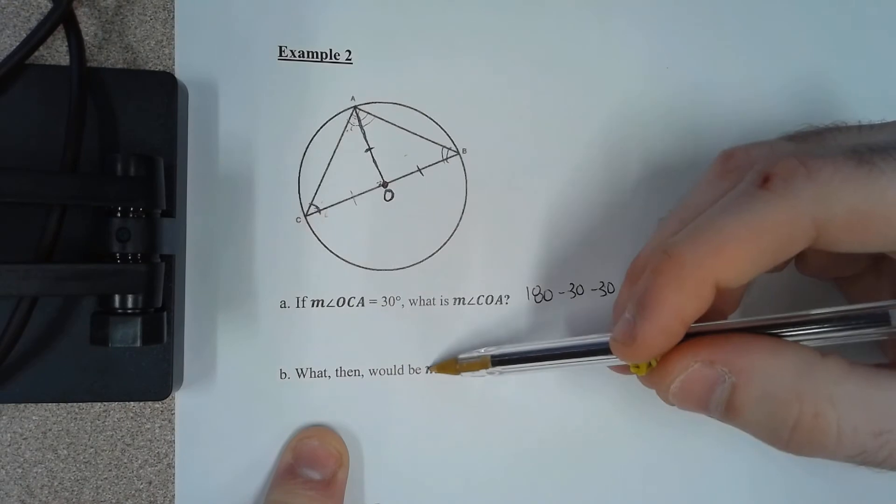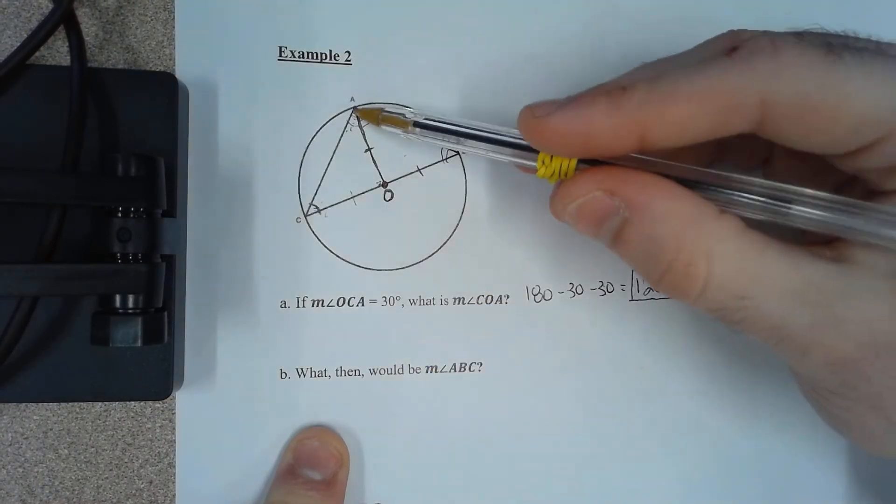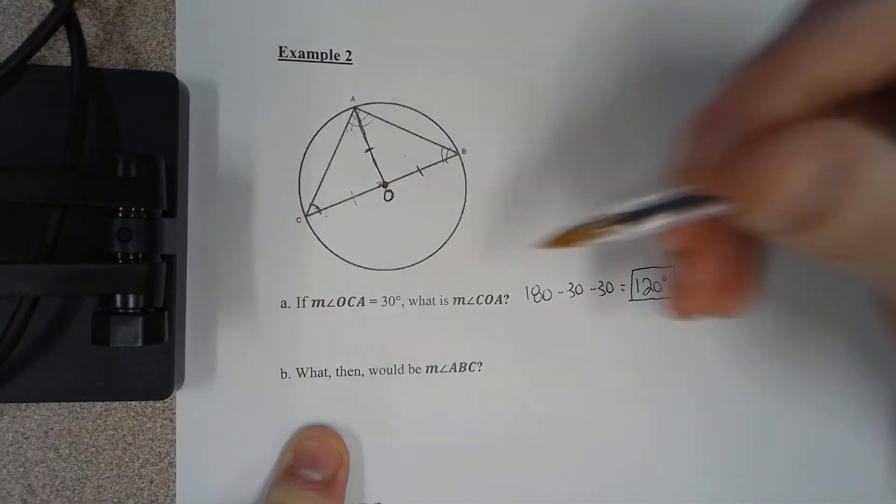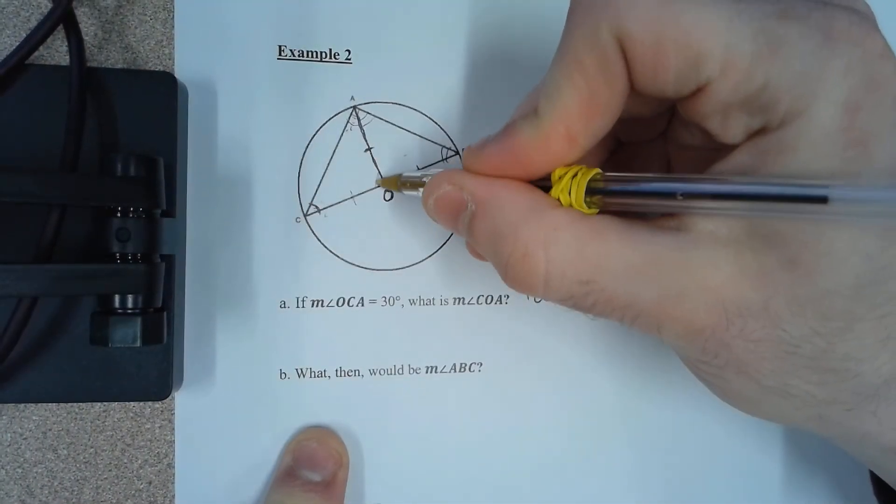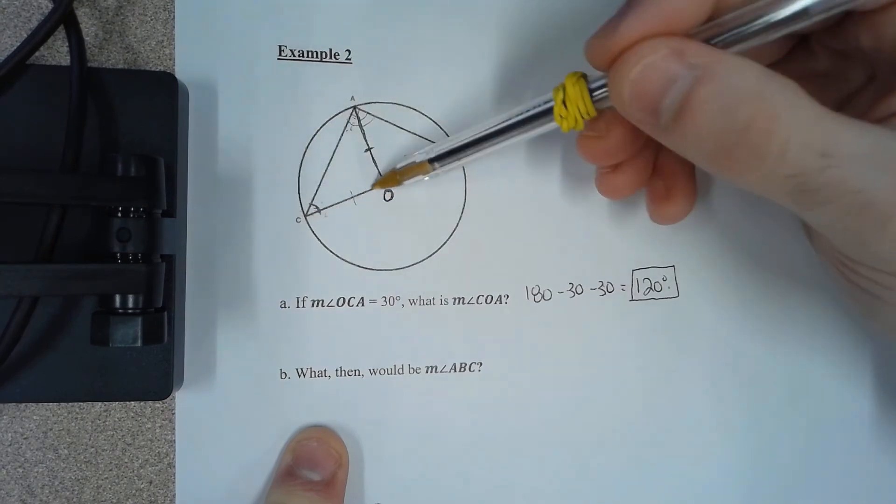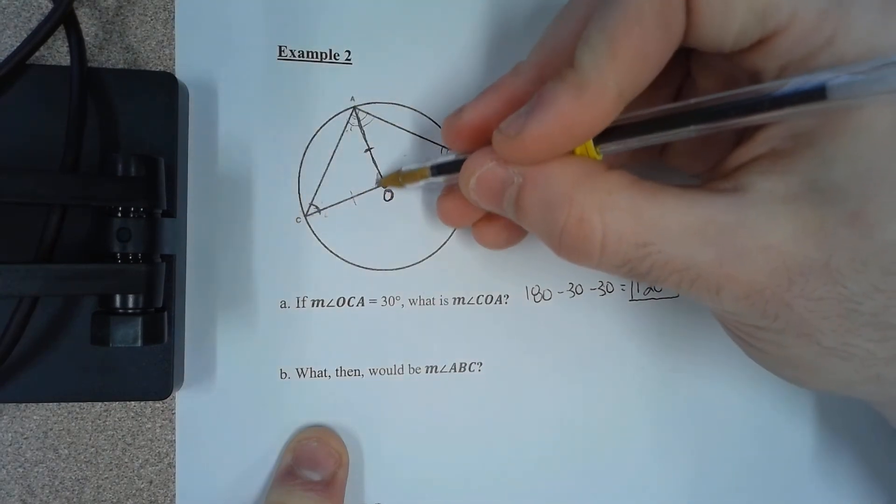So what then would be the measure of angle ABC? Okay, so this angle that we just found, COA, we said this was 120 degrees.